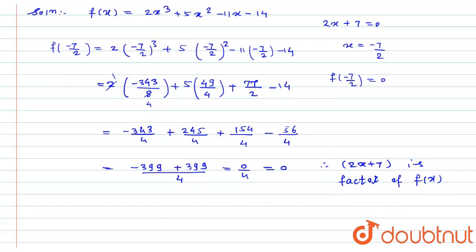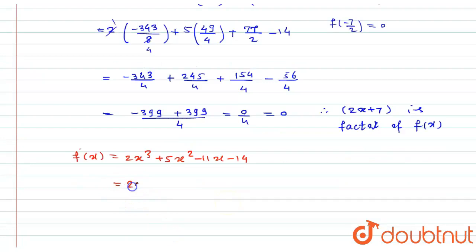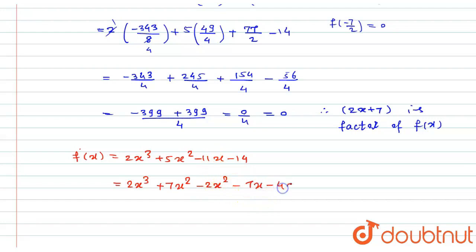Now for the complete factorization, I write f(x) = 2x³ + 5x² − 11x − 14. I split 5x² as 7x² − 2x², and split −11x as −7x − 4x, keeping −14 as is.